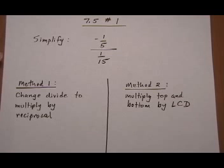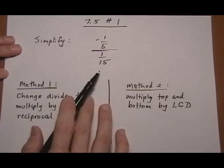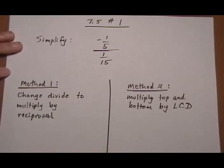7.5 number 1. Section 7.5 deals with complex fractions and how to simplify them. This first one that I picked out doesn't have any variables at all in it, so it's a nice one to start with.